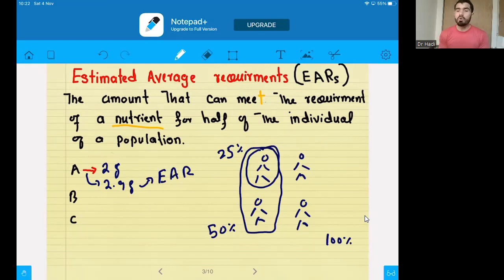Similarly, you can check, you can determine the EAR for B as well. You can determine the EAR for C as well, and you can determine the EAR for any other nutrient. So, this was EAR. Now you just memorize 2.9 grams in your head. I would like to show you something more.